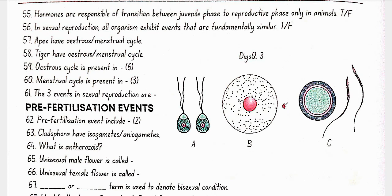In sexual reproduction, all organisms exhibit events that are fundamentally similar — true. Apes have a menstrual cycle. Tiger has an estrus cycle. Estrus cycle is present in cows, sheep, rats, deer, dogs and tiger. Menstrual cycle is present in humans, monkey and apes. The three events in sexual reproduction are pre-fertilization, fertilization and post-fertilization events.